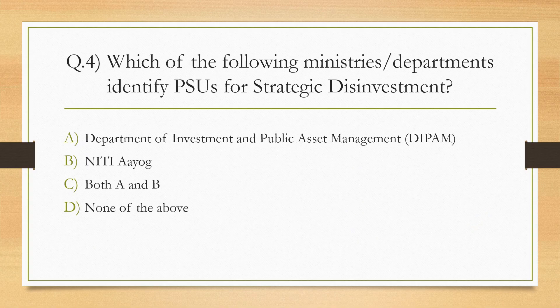Which of the following ministries or departments identify PSUs for strategic disinvestment? Options: Department of Investment and Public Asset Management (DIPAM), NITI Aayog, both A and B, none of the above. The correct answer is C — both A and B, DIPAM and NITI Aayog.